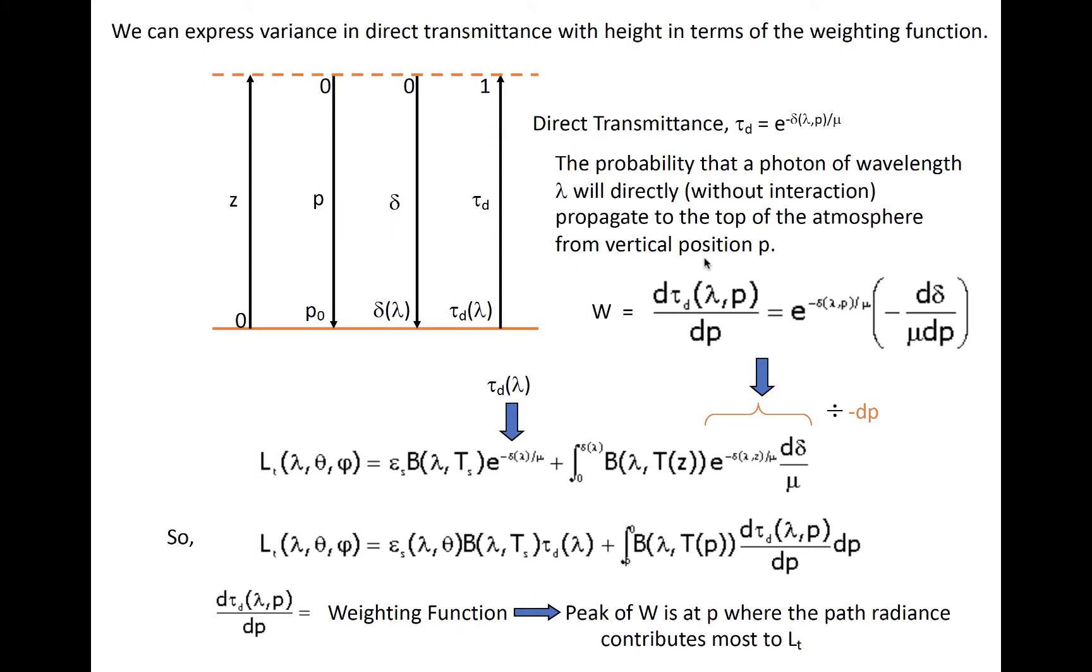Recall the definition of direct transmittance. It is the exponential of the negative vertical path optical depth of the atmosphere above a point normalized by the secant angle to correct for the path length. If we integrate direct transmittance with respect to pressure, we get an expression.